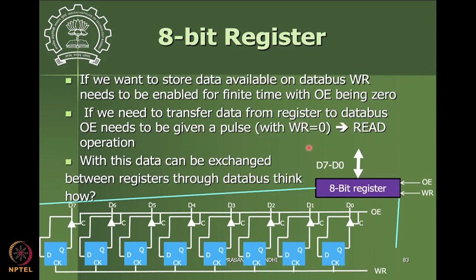For storing data, the WR pin needs to be enabled for a finite time with output enable being zero — we make output enable zero, give a small pulse on the WR pin, and your data is stored. To transfer data from the register to the data bus, we enable output enable and keep WR low — then the read operation happens, making the register value available on the data bus.